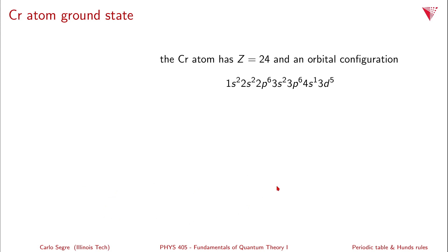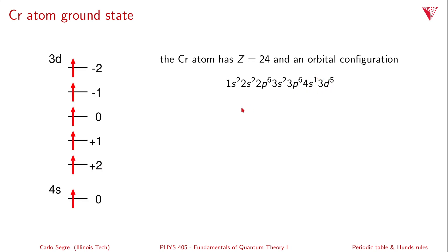Now let's look at chromium, which has Z=24. You might expect its configuration to be 4s2, 3d4, but in fact it is 4s1, 3d5 with everything else filled. Iron (two higher) has 4s2, 3d6. For chromium, both the 4s and 3d orbitals are not filled, and we'll see exactly why this is energetically favorable.